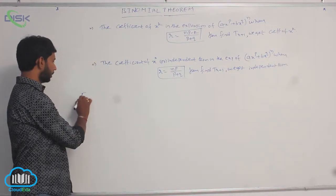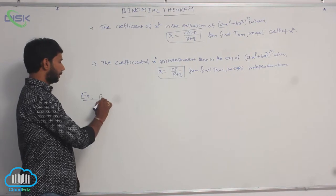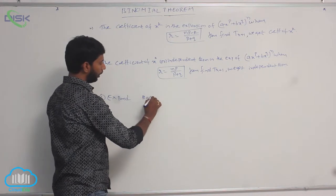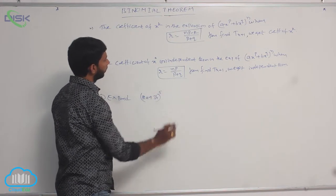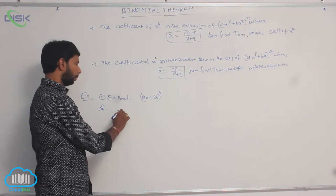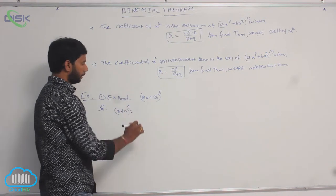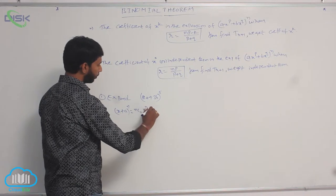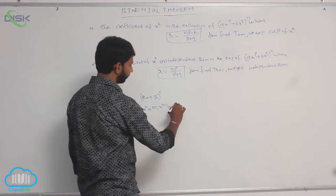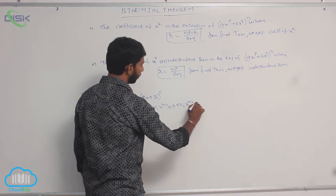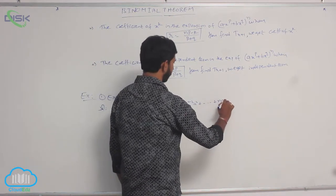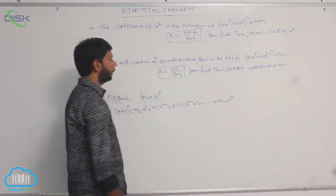Next, go to examples. Expand (2a + 3b)^5. These are of the form (x + a)^n, where the binomial theorem gives: nC0·x^n + nC1·x^(n-1)·a + nC2·x^(n-2)·a^2 + ... + nCn·a^n.